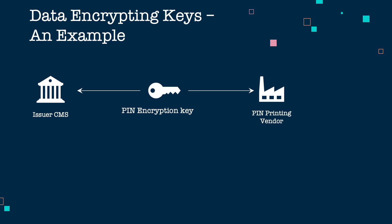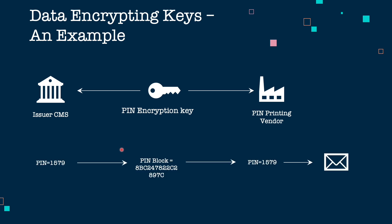Let's take an example to understand data encrypting keys. A bank wants to send a PIN mailer to a customer. The bank engages a PIN printing vendor, and both share a common PIN encrypting key. The bank generates a PIN, say 1579, for a given card and transmits it to the vendor encrypted as a PIN block. The PIN printing vendor decrypts the original PIN, prints it on paper, and mails it to the customer. Such keys used to encrypt data are called data encrypting keys.